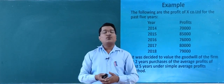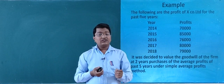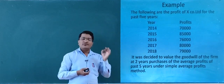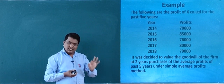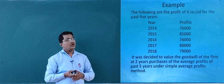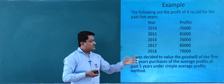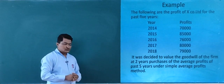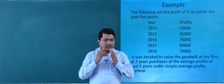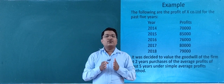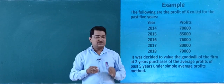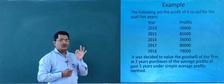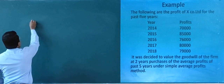They ask us to calculate the value of goodwill at 2 years purchases with the average profit of past 5 years under simple average profit method. So before we calculate the value of goodwill, first of all we need to calculate the average profit of past 5 years.